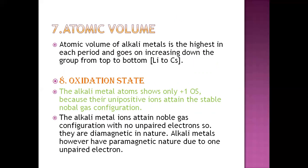The atomic volume of alkali metals is the highest in each period and increases from top to bottom down the group. Regarding oxidation state, alkali metals show only a +1 oxidation state because they have one electron to lose. Since metals tend to lose electrons and a positive sign results from electron loss, these elements show +1 oxidation state. Their ions attain a stable noble gas electronic configuration.